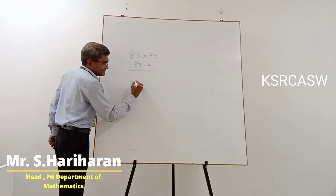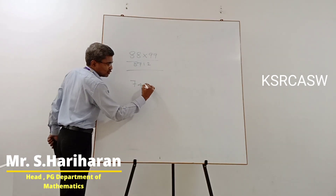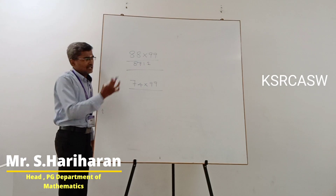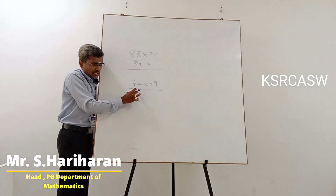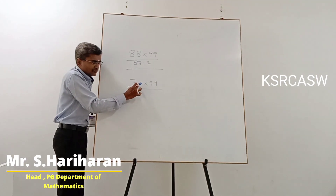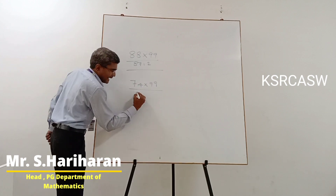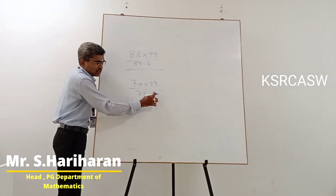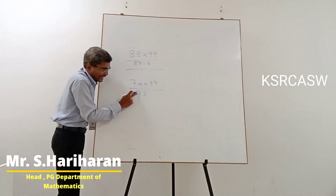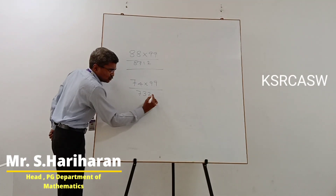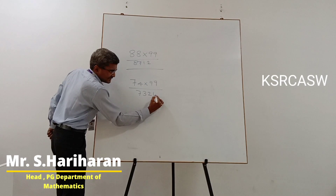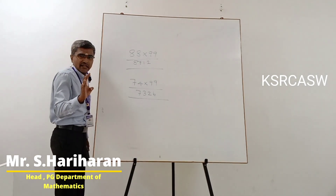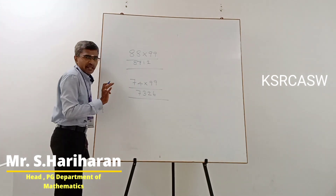One more example: 74 into 99. So, 74 minus 1 gives answer 73. And the remaining 2 digits: 9 minus 7 is 2, and 9 minus 3 is 6. So 73, 26 — the final answer for this product is 7326.